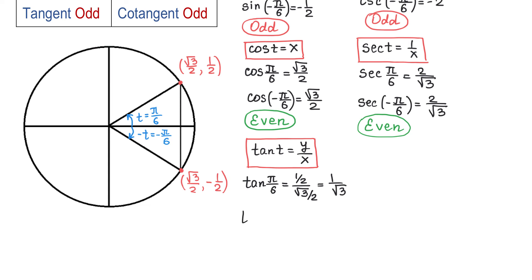Now let's find tangent of negative pi over 6. Here, y is negative 1 half and x is square root of 3 over 2. Then because we divide negative by positive, the result will be negative, which is negative 1 over square root of 3.